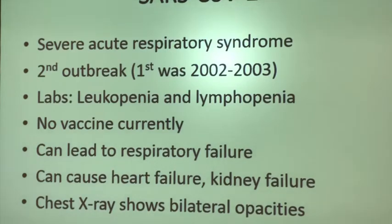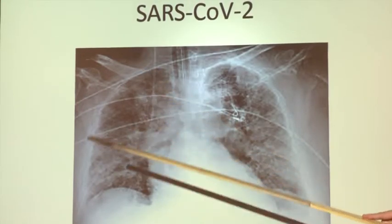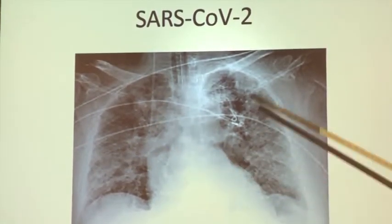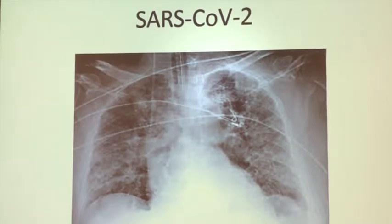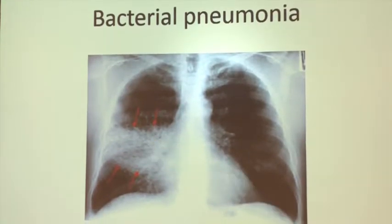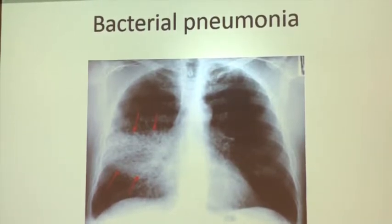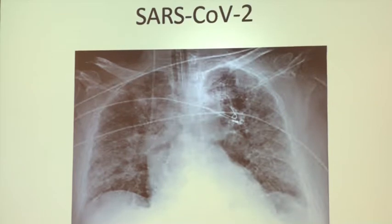There is currently no vaccine, but they're working on that. This infection can cause respiratory failure, heart failure, and kidney failure. The chest x-ray typically shows bilateral opacities. Here is a chest x-ray of a COVID patient — you can see infection of both lungs everywhere. The white areas are affected. Some people describe what we call a ground glass appearance, which is quite different from bacterial pneumonia, which generally only affects one area of the lung.